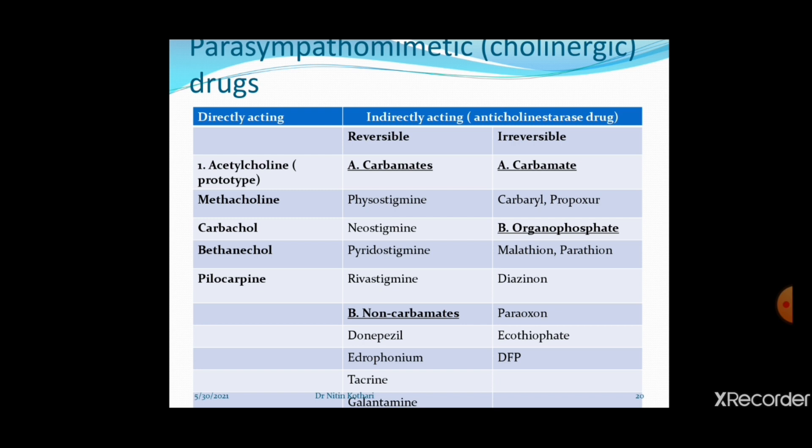Directly acting parasympathomimetic or cholinergic drugs include four main agents. First is acetylcholine itself, but it is very short-acting and acts upon all muscarinic and nicotinic receptors in the body, so it is not routinely used. The other directly acting cholinergic drugs are methacholine, carbachol, bethanechol, and pilocarpine.